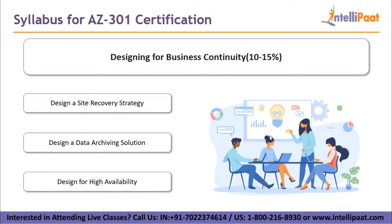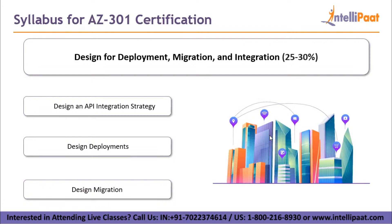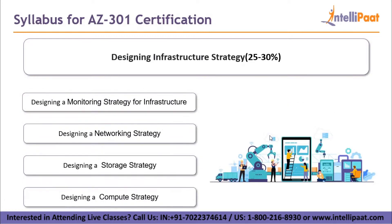The next subsection is Design for Deployment, Migration, and Integration. These aspects play an important role in a project but are generally addressed at the end. Key skills include designing an API integration strategy, designing deployments, and designing migrations. The final subsection is Designing Infrastructure Strategy, which covers designing a monitoring strategy for infrastructure, designing a network strategy, designing a storage strategy, and designing a compute strategy.